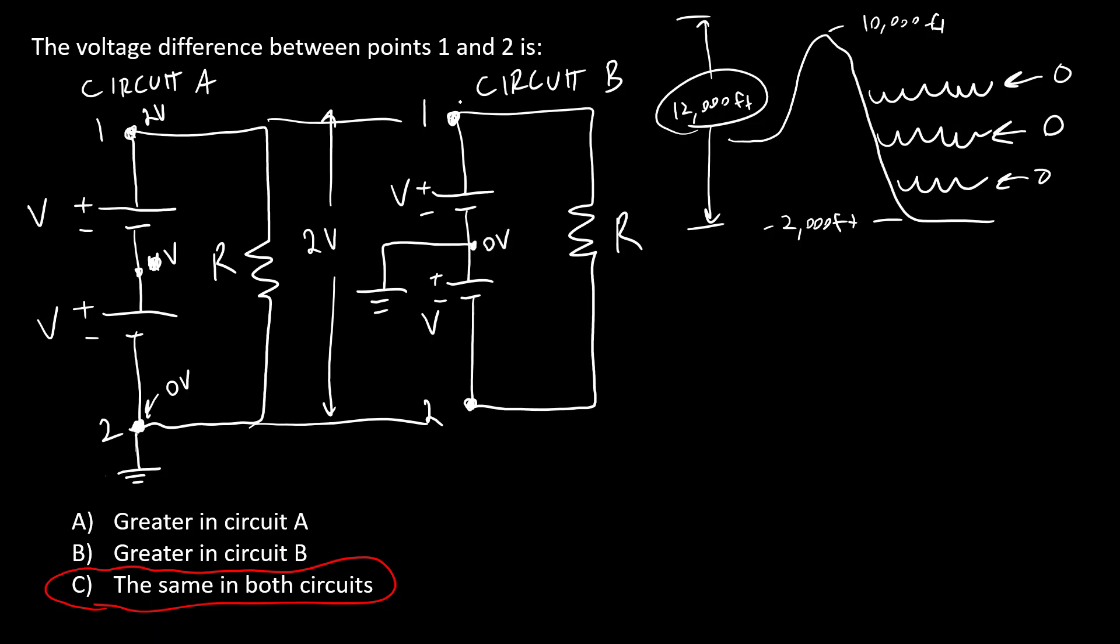Here I've defined this point as zero volts, which means this point is going to be positive V and this point is going to be negative V when measured relative to ground, but the difference between points 1 and 2 is still 2V.